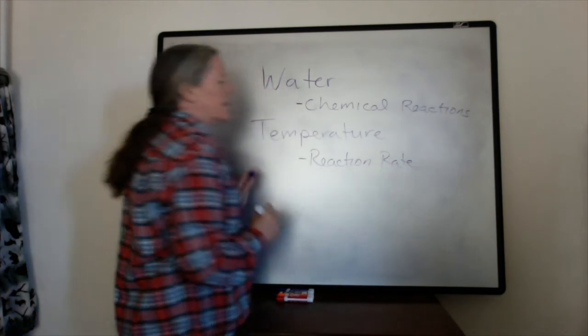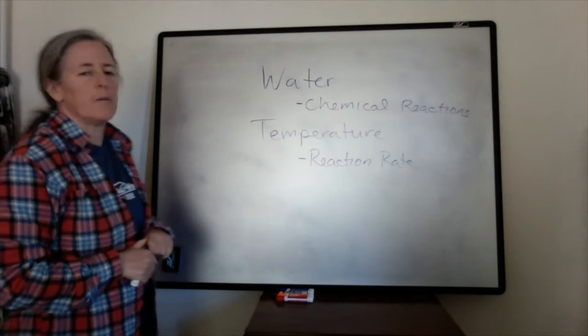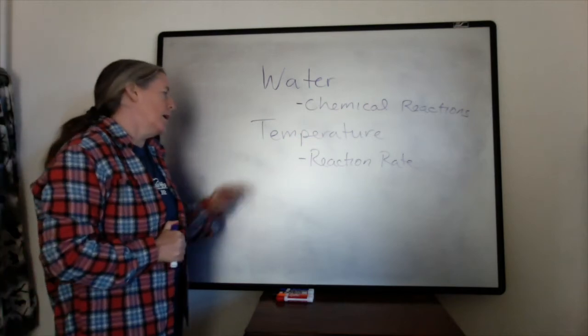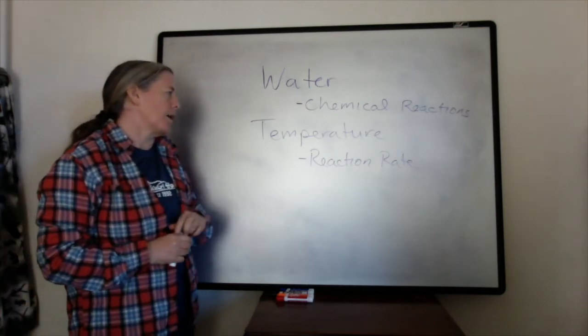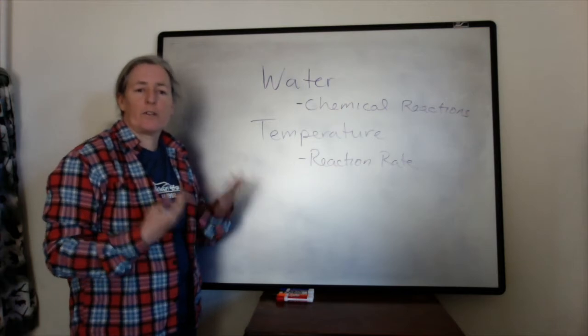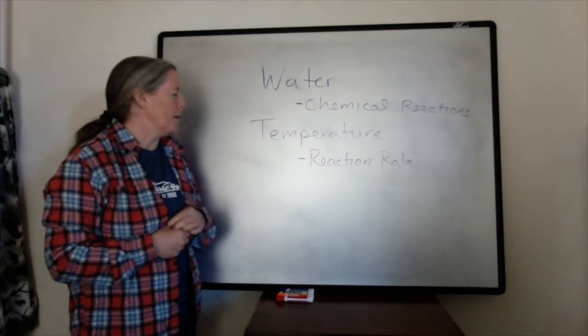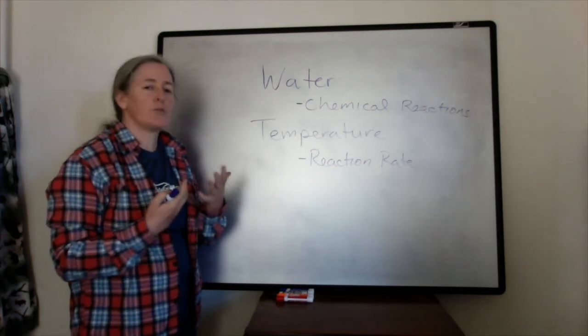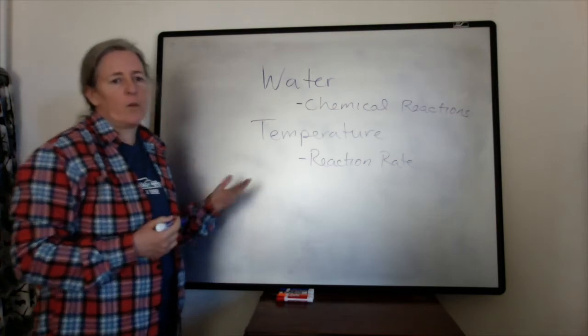So given the same rock type and the same water chemistry, a rock near the equator where it's warm on average will be much more quickly chemically weathered than one in Antarctica.